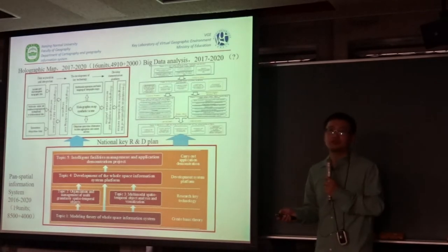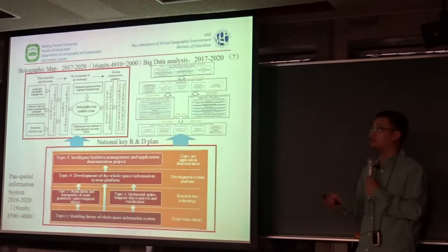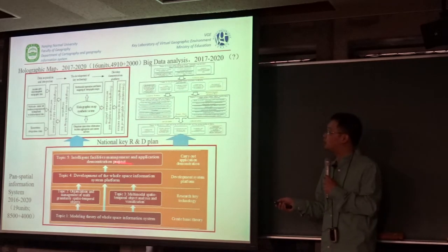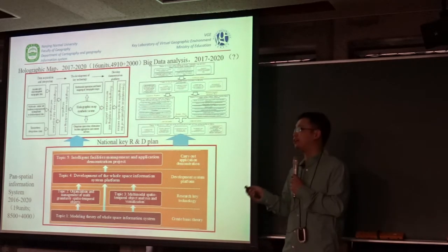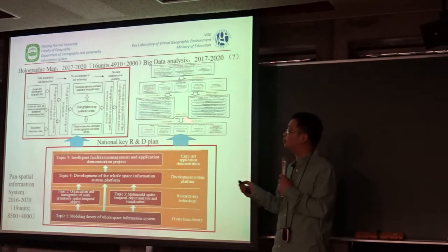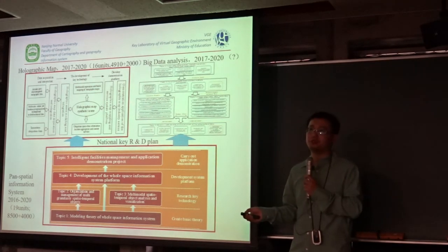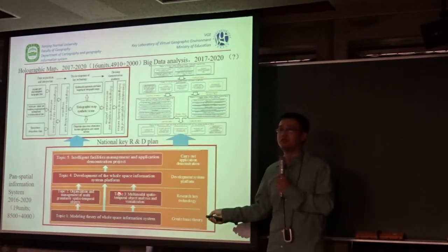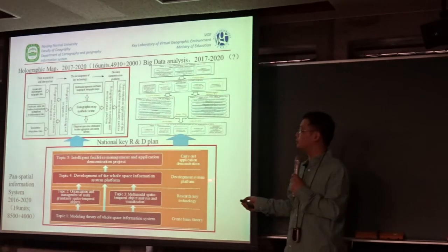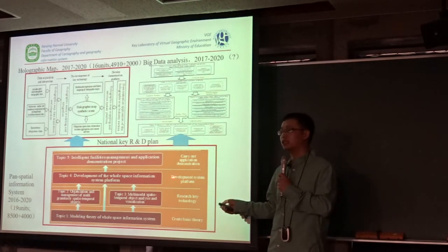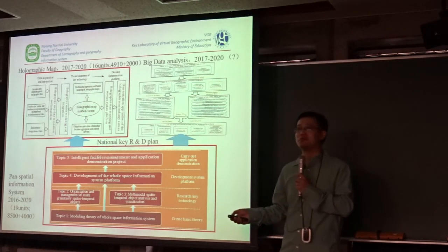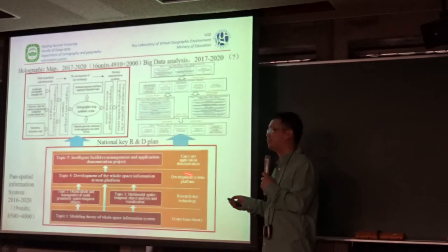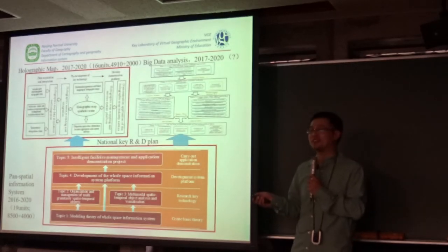Over the last year, China started a national wide key research and development plan. In GIS, it has three big projects. This project is the pan-spatial information system — it is the biggest. It hopes to directly abstract the real world into the computer environment.